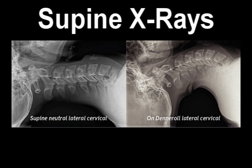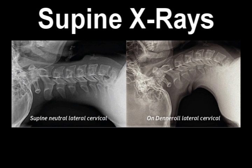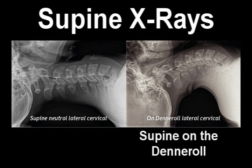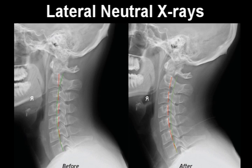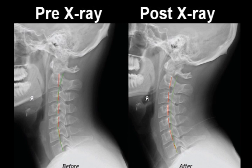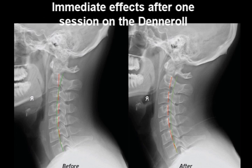Here are two x-rays taken to show the effects on your neck during your session time. The x-ray on the left shows the person laying supine, whilst the x-ray on the right shows the person laying supine whilst on the deniral. These standing lateral neutral x-rays were taken pre and post to one session on the deniral. You can clearly see the immediate effects to your spine.